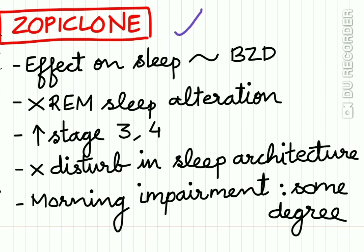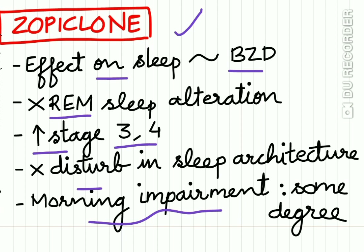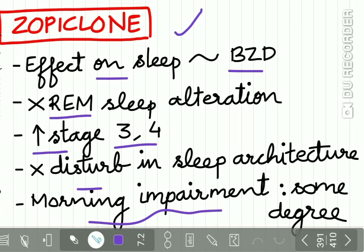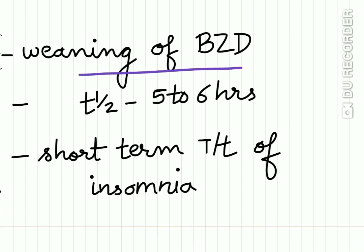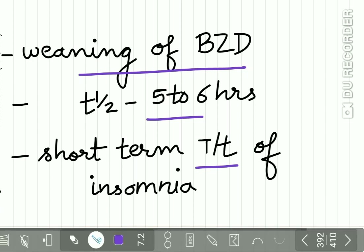Zopiclone: the effect on sleep is similar to benzodiazepines. It does not cause any REM sleep alteration and increases stage 3 and 4 sleep without disturbing sleep architecture. Some morning impairment can be seen. This drug can be used for weaning off benzodiazepines. The half-life is 5 to 6 hours and it is useful for short-term treatment of insomnia.